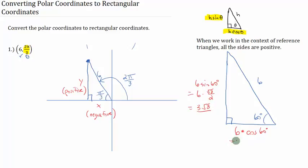And this side, the cosine of 60 degrees is 1 half, so you multiply 6 times 1 half, which is simply 3. So now we know the adjacent side and the opposite side. So that tells us over here, x, the adjacent side, is 3 in the negative direction. So x is negative 3. And y is 3 square roots of 3 in the positive direction, so y is 3 square roots of 3.